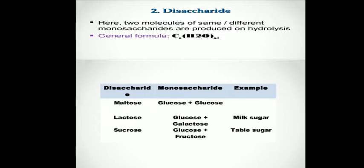It is the sugar formed when two monosaccharides are joined by a glycosidic linkage. Whenever two same or different types of monosaccharides come together and form a single molecule by joining with the help of a glycosidic bond, that molecule is known as a disaccharide.